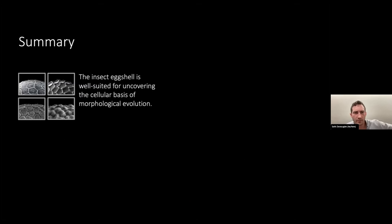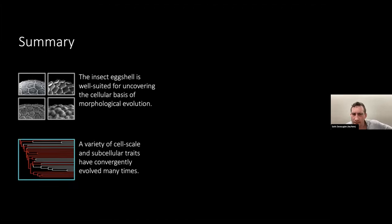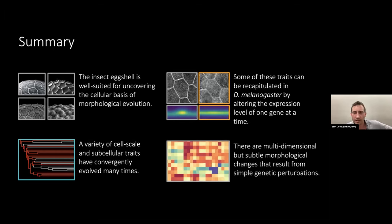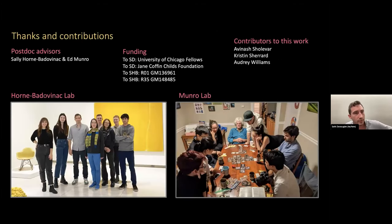With that, I'm going to close and summarize that the insect eggshell is well-suited for uncovering the cellular basis of morphological evolution. There's a variety of cell scale and subcellular traits that have convergently evolved many times. Some of these traits can be recapitulated in Drosophila melanogaster by altering gene expression, one gene at a time in just one tissue. And lastly, there are these multidimensional but subtle morphological changes that result from simple genetic perturbations. I'd like to acknowledge and thank the folks who worked on this project with me, including Sally and Ed, whose labs are shown here, and also my funding. And with that, I'll close if there's time for any questions.